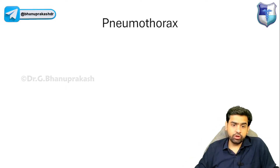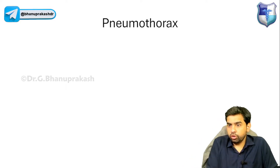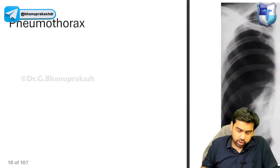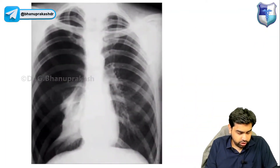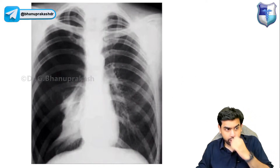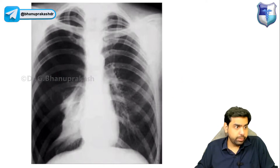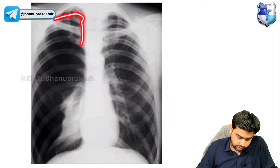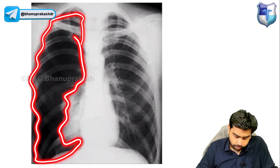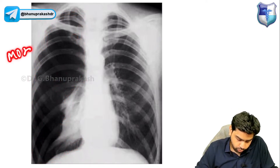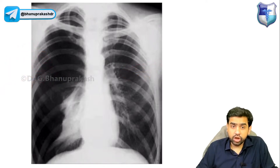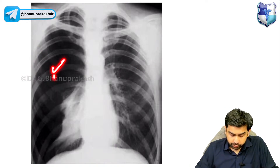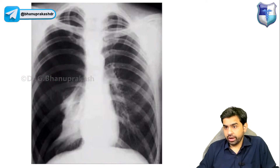Let's talk about pneumothorax. Looking at this X-ray image, you can see that this particular part of the lung appears more black compared to the opposite side. This is what a pneumothorax looks like — this part is appearing more black as compared to the opposite side, and that is what defines a pneumothorax.